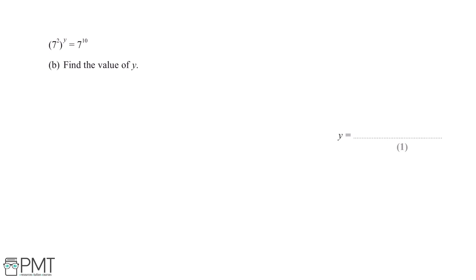For this question we need to know the algebraic principle that a to the power of x, to the power of y, is equal to a to the power of x multiplied by y. We can apply this rule to this question, which means that 7 squared to the power of y will be equal to 7 to the power of 2y.